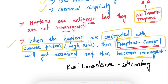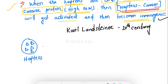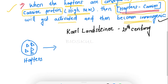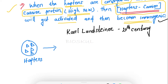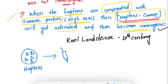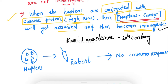Karl Landsteiner discovered that when haptens are conjugated with a carrier protein, they become immunogenic. For his experiment, he took rabbits. When hapten alone was injected into a rabbit, no immune response occurred — no antibodies were formed.